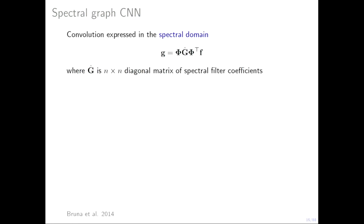This gives us a way to define an analogy of a convolutional layer on a graph done in the frequency domain. We compute the Fourier transform of f, multiply it by a diagonal matrix g containing the learnable Fourier coefficients of the filter, and then compute the inverse Fourier transform by multiplying by phi. This is a basic building block — we can apply multiple such filters, add nonlinearities, stack convolutional layers, and interleave them with pooling.